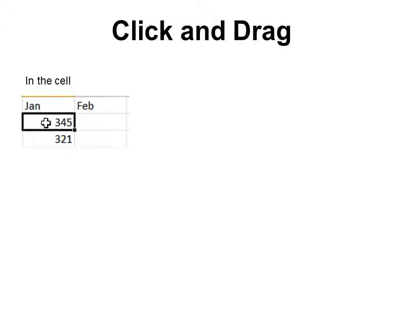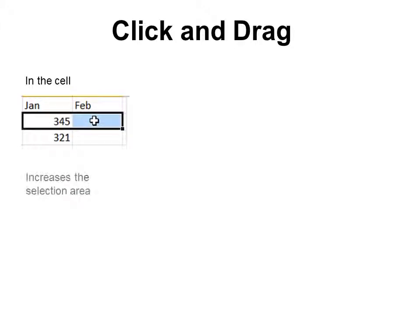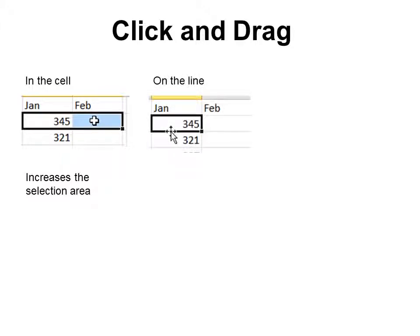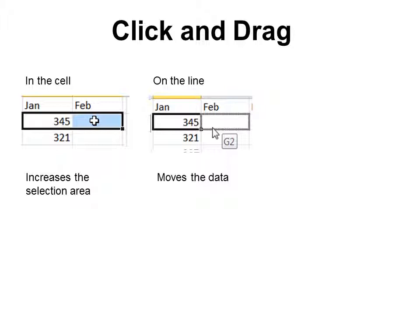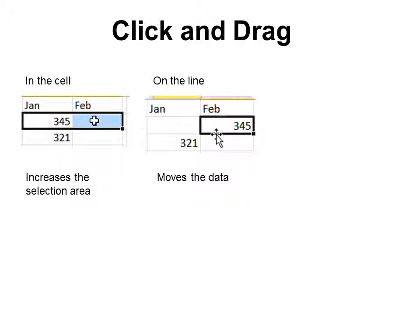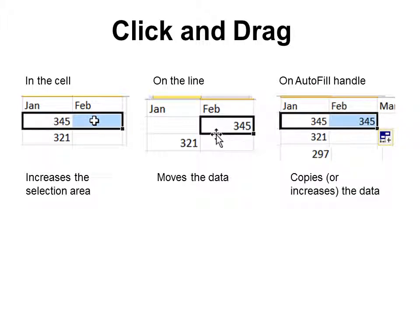When you click and drag, make sure you know what you're clicking on first. If you click in the cell, the cursor looks like a big cross — clicking and dragging will increase the selection area only. If you click and drag on the line, the cursor changes to a four-sided arrow and it actually moves the data. If you click on the autofill handle in the bottom right corner, it will copy or increase the data.